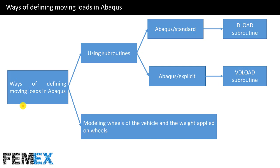Now I want to talk about ways of defining moving loads in Abaqus. There are two main methods: the first one is using subroutines, and the second one is modeling the wheels of the vehicle and applying the weight on the wheels.